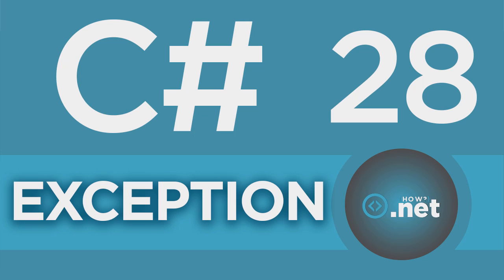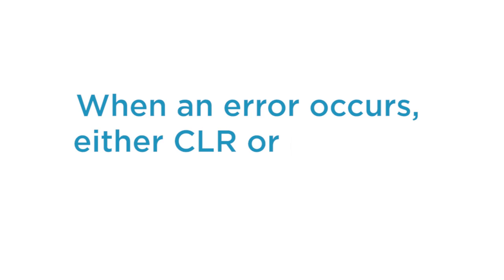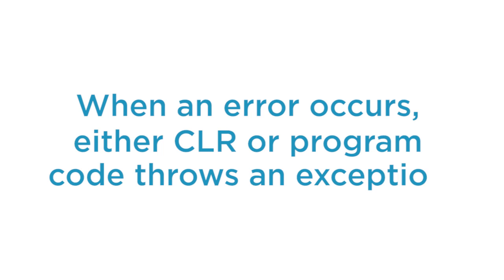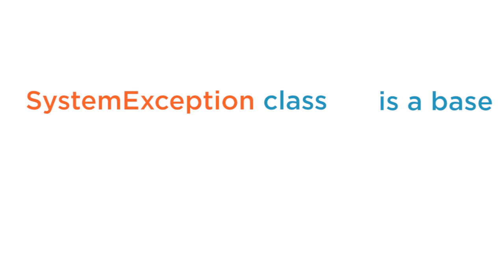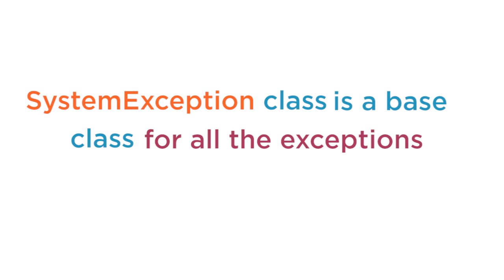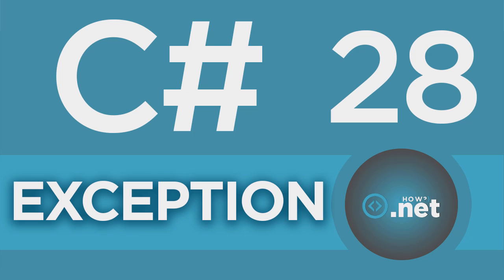An application may encounter an error during execution. When an error occurs, either the CLR or program code throws an exception which contains necessary information about the error. The SystemException class is a base class for all exceptions that can occur during the execution of the program. But how can we handle exceptions?